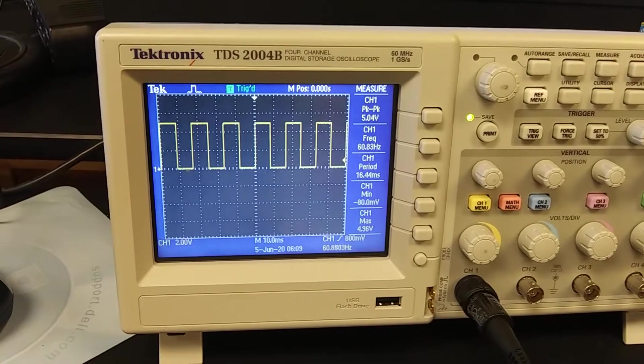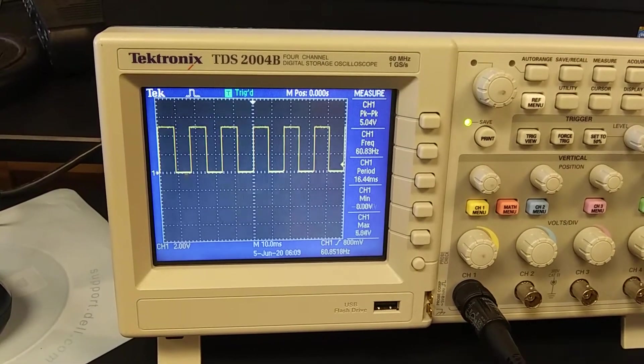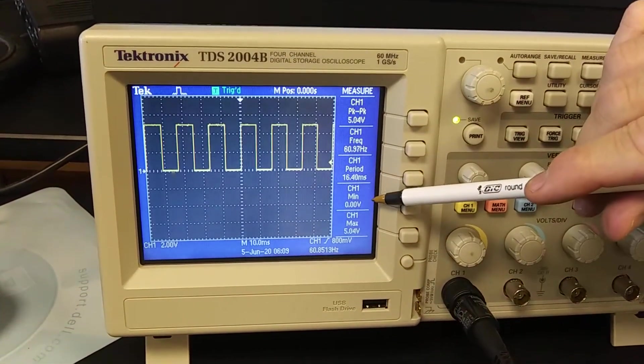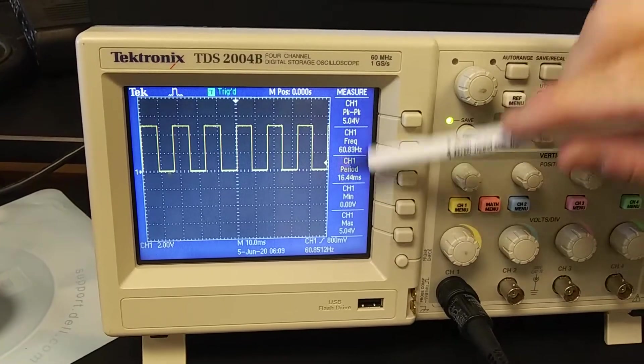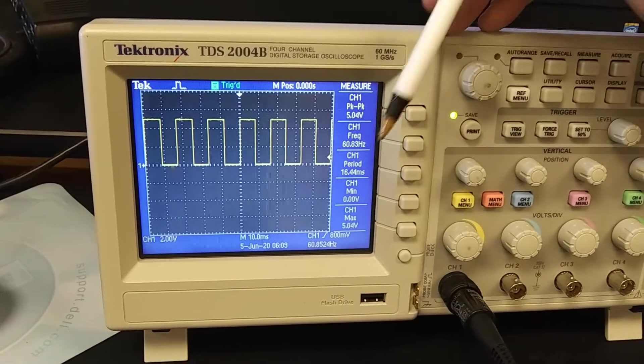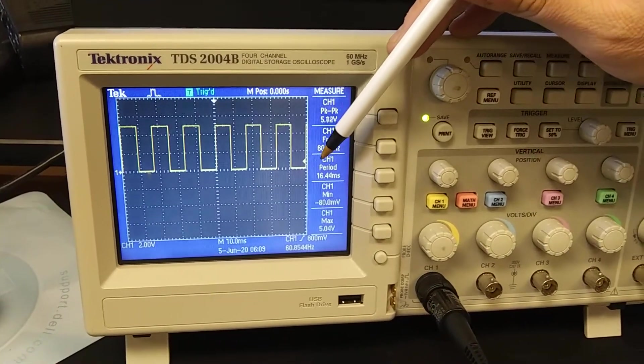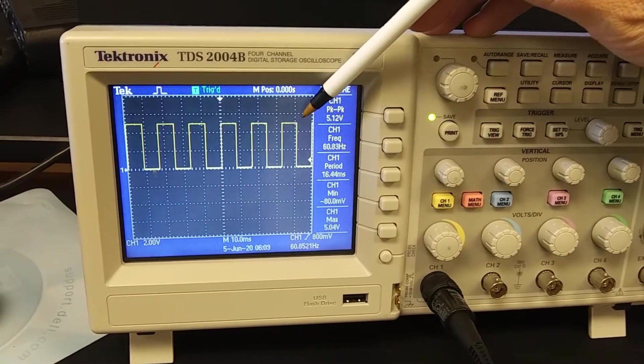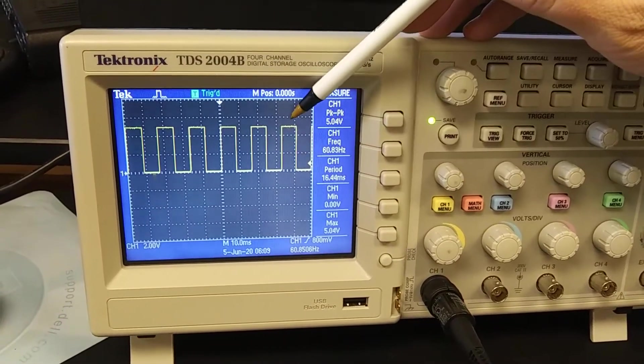Now it's going from negative 80 millivolts up to about five volts, so it's going approximately from zero volts up to five volts now oscillating up and down. So this is now very similar to our power supply and switch. We can turn it on to five volts then off, on to five volts then off.